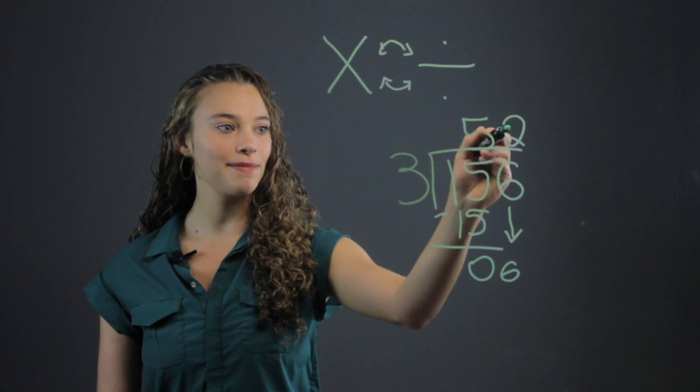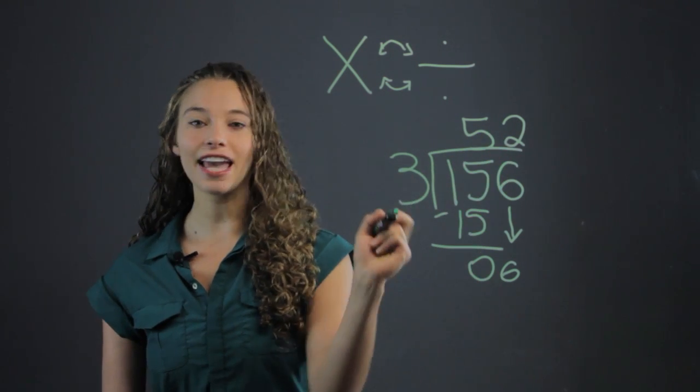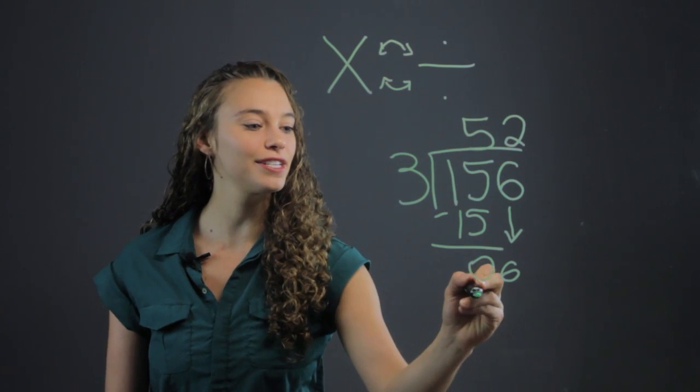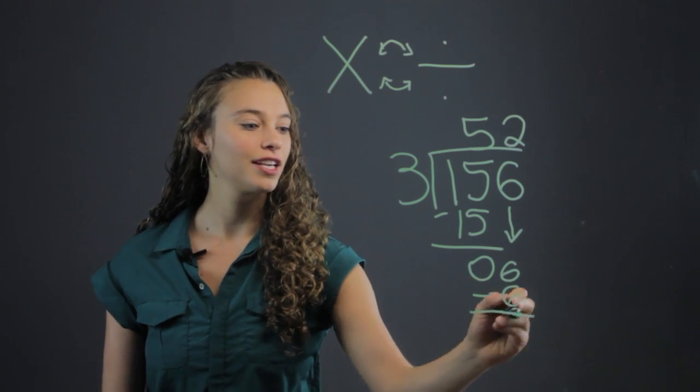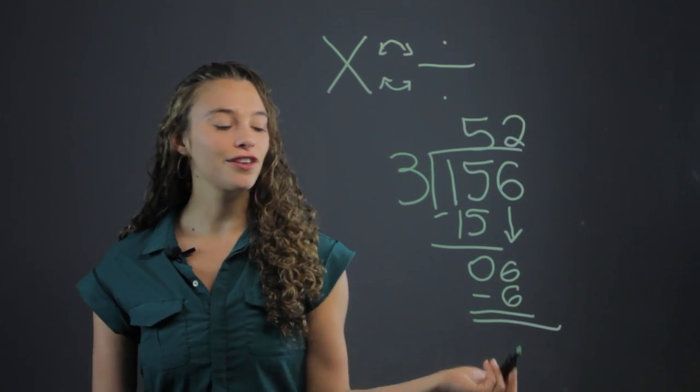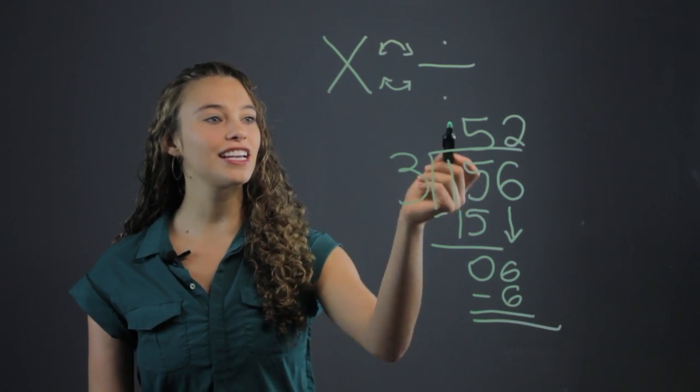Make sure you have perfect alignment and placement of the numbers. Again, you multiply. 3 times 2 is 6. And again, subtract. And you end up with 0. So there's no remainder. So the answer is 52.